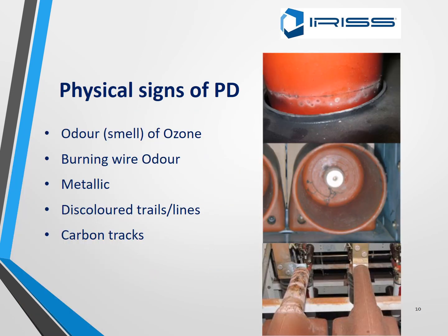The physical signs of PD include: an odour — the smell of ozone, a smell of burning wire, and a metallic smell. There will also be discoloured trails or lines, and carbon tracks.